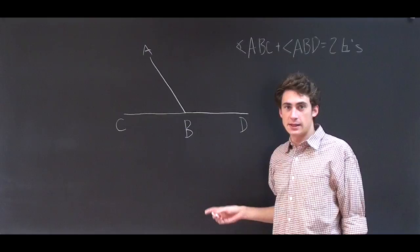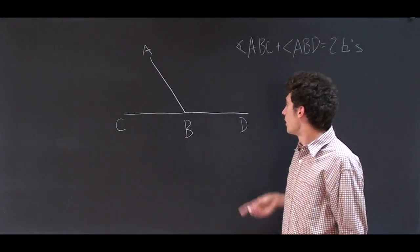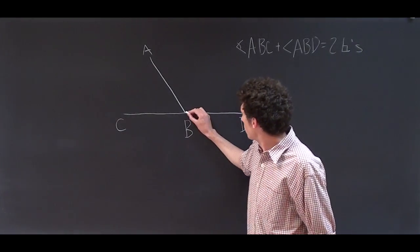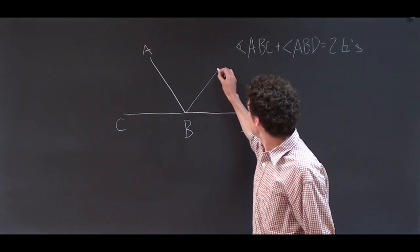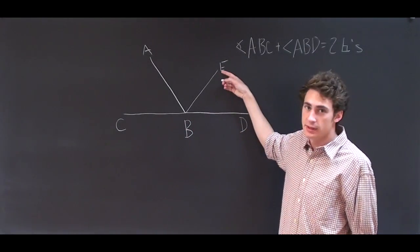So what I'm going to prove is that line BC is in a straight line with line BD. For if not, we could produce line BE such that line CB is in a straight line with line BE.